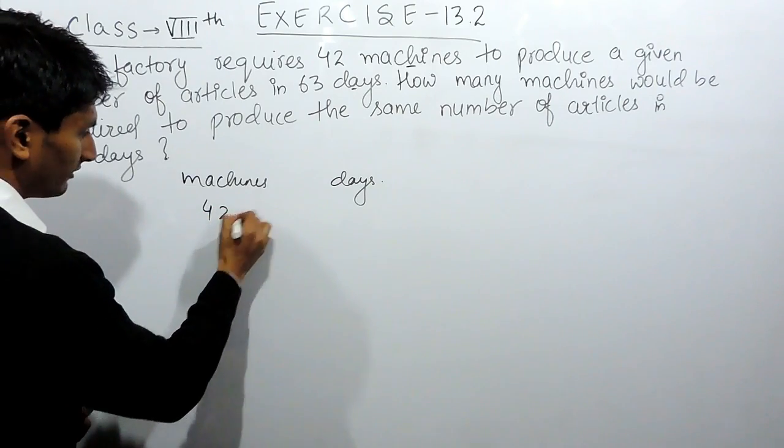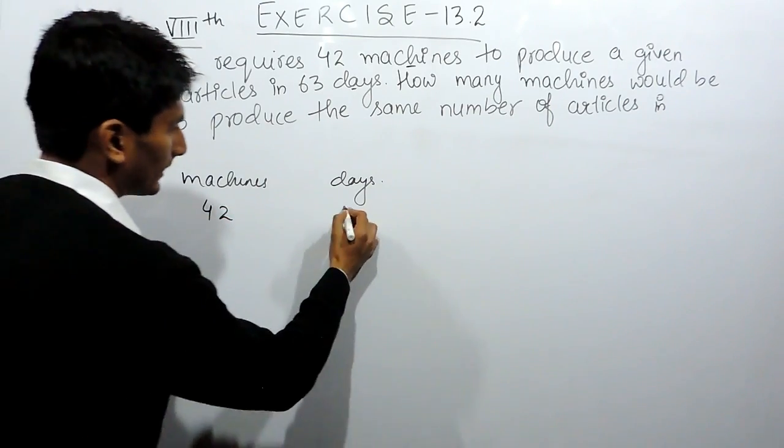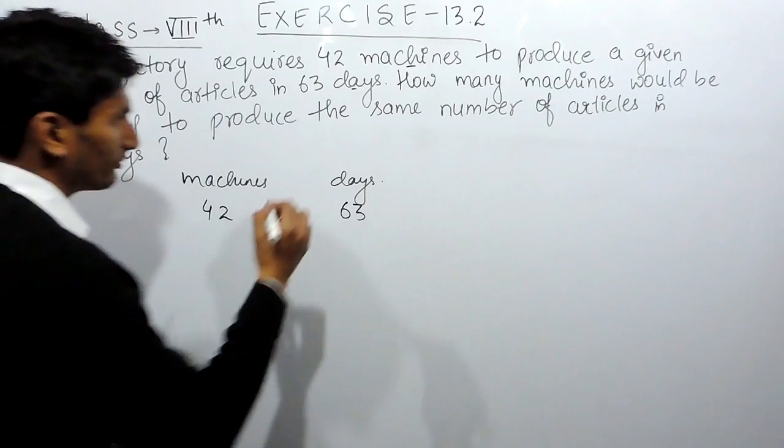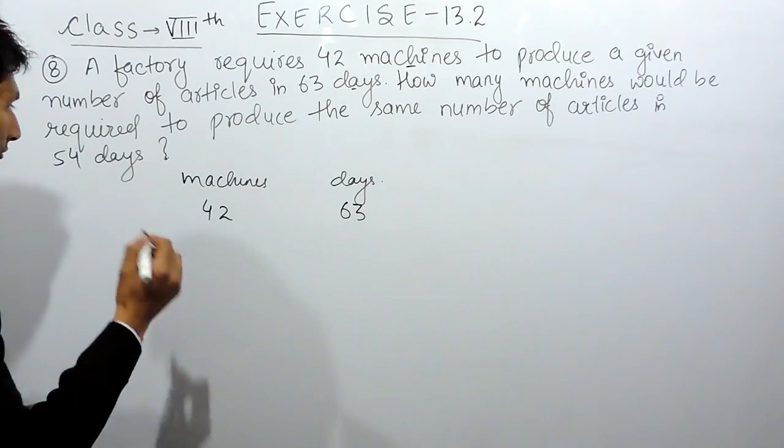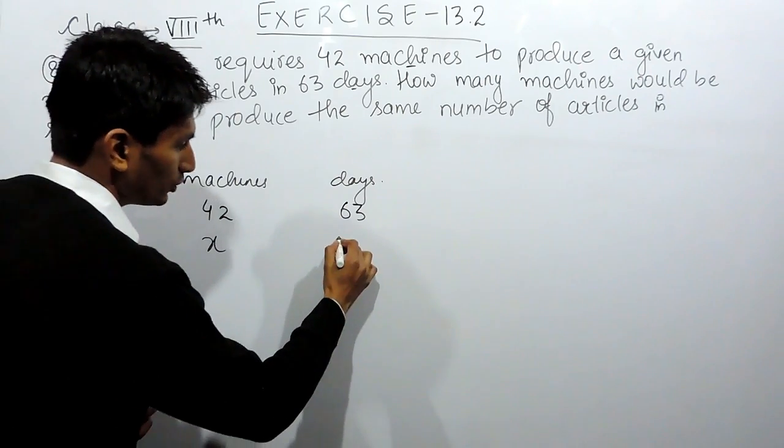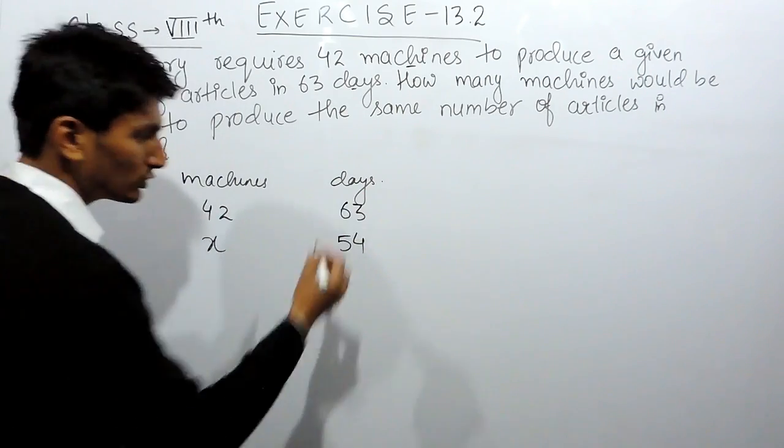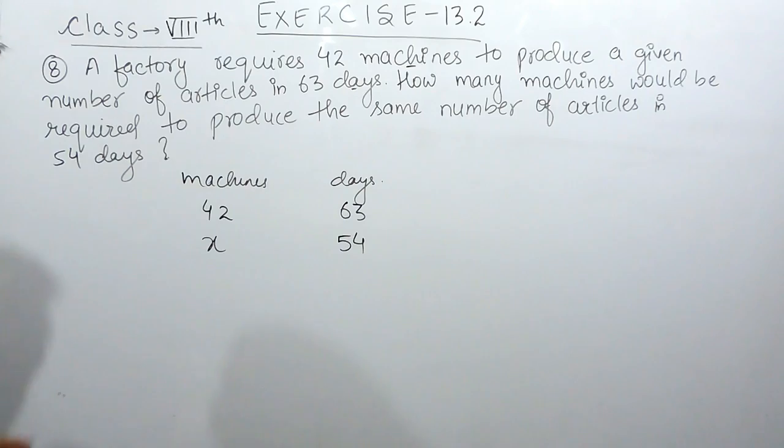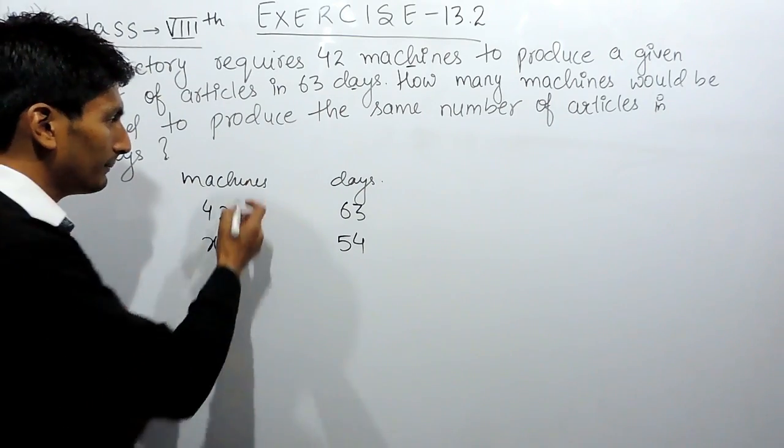It is given that 42 machines complete a certain piece of work in 63 days. You have to find out how many machines would be required if you have to complete this same piece of work in 54 days. So now we know the parameters.